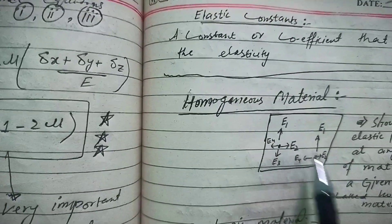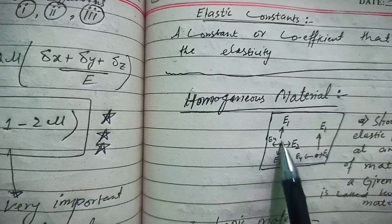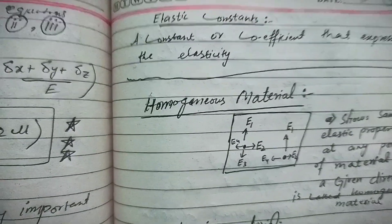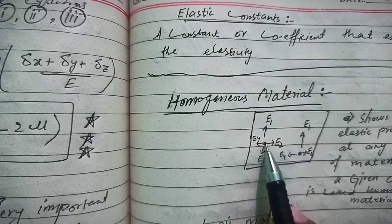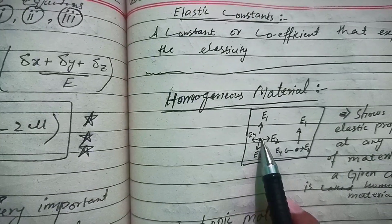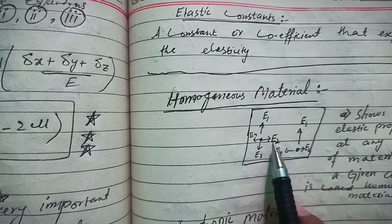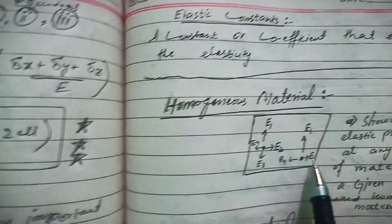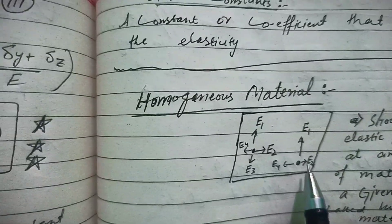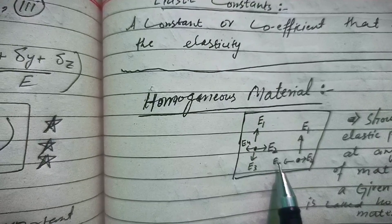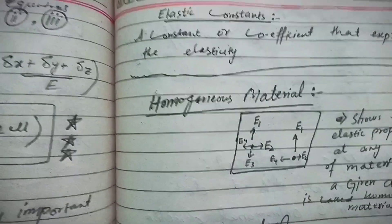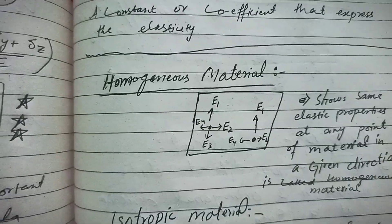This material is homogeneous because at any point in a given direction its elastic properties are the same. You can clearly see that at this point in this direction the elastic property is E2, and at another point in the same direction it is also E2. Similarly, in another direction the elastic property is E4 at both points.